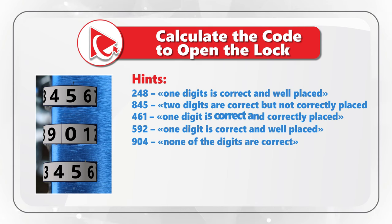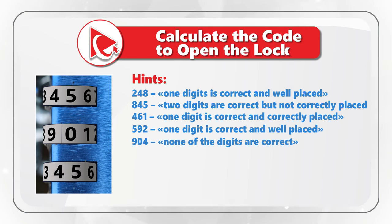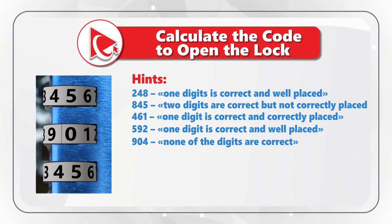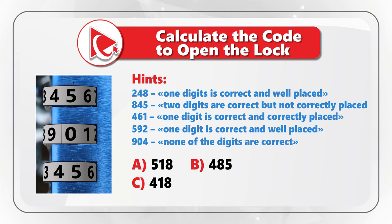In the digits 592, only one digit is correct and it is well placed. And the last hint: in the digits 904, none of the digits are correct. To open the lock, you need to process all the hints and select one out of four possible choices: Choice A — 518, Choice B — 485, Choice C — 418, and Choice D — 568.